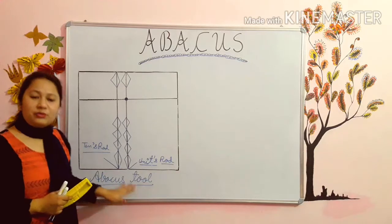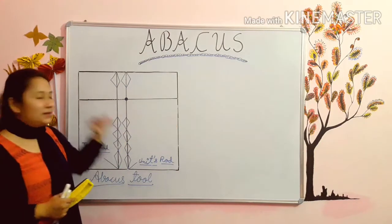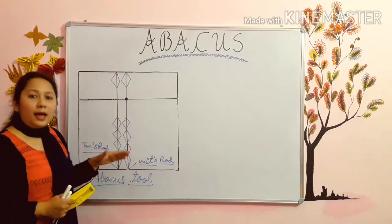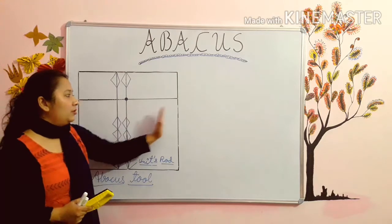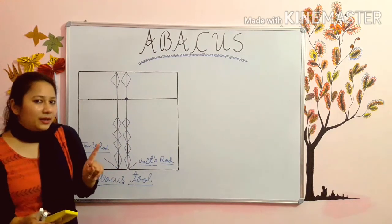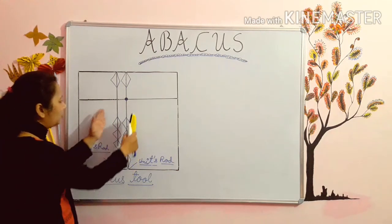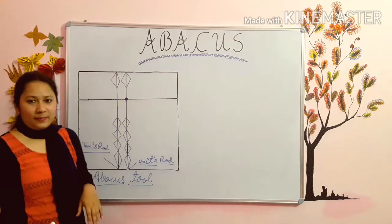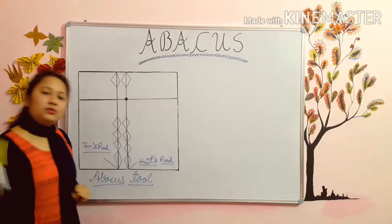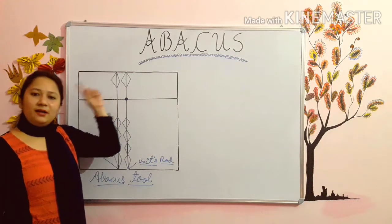The abacus tool which I have drawn is set. Set means upper beads are up and lower beads are down. It has other rods also, but I have not drawn them because for calculations we need only these two rods. So students, let's start our topic with the first sum.